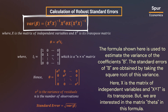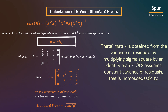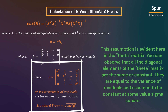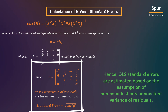The standard errors of beta are obtained by taking the square root of this variance. Here, X is the matrix of independent variables and X-transpose is its transpose. We are interested in the matrix theta in this formula. The theta matrix is obtained from the variance of residuals by multiplying sigma-squared by an identity matrix. OLS assumes constant variance of residuals — i.e., homoscedasticity — and this assumption is evident in the theta matrix. All the diagonal elements of the theta matrix are the same, equal to sigma-squared. Hence, OLS standard errors are estimated based on the assumption of homoscedasticity.